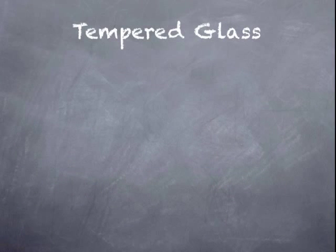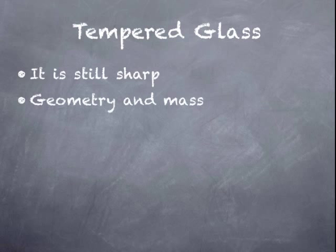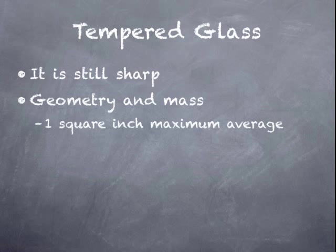Tempered glass is the most common safety glazing that we see used for this reason. It's still sharp — it's still glass — and when it breaks, it has sharp edges that can cut you. But the geometry and mass is not there like what we saw in that video from the movie Ghost. That large piece of glass has enough mass to impact and hurt you, but the small pieces cannot. The test requires that no larger than one square inch maximum size pieces are created upon impact, if the glass is to break.